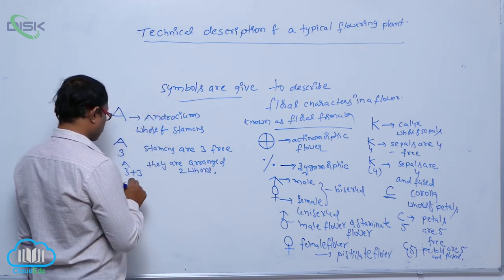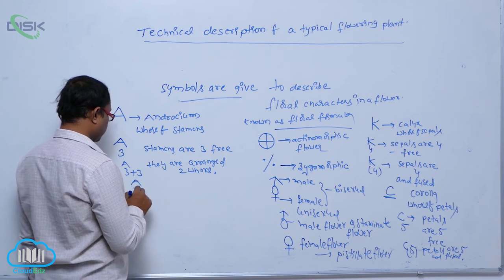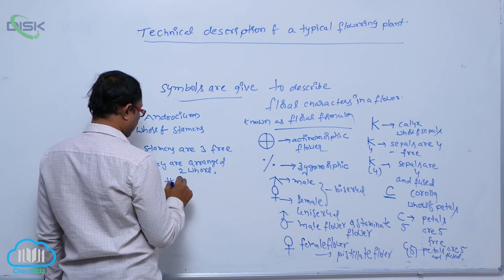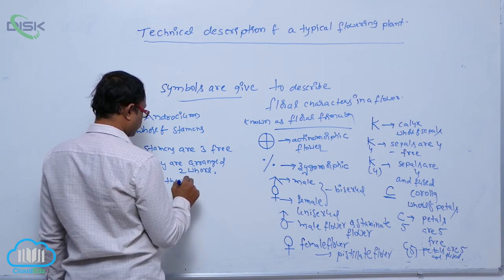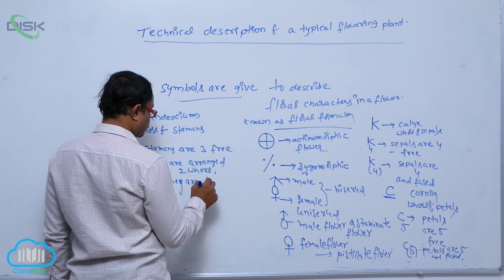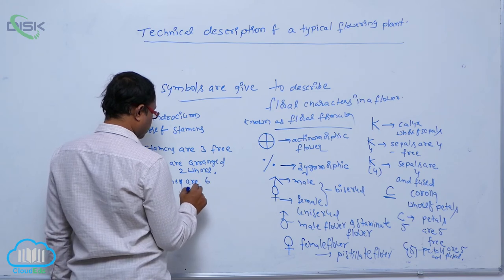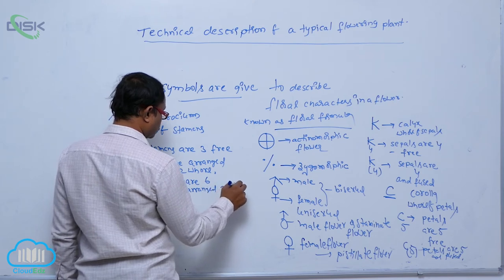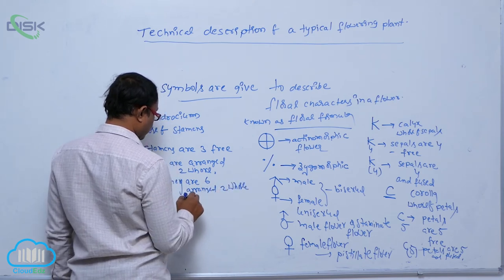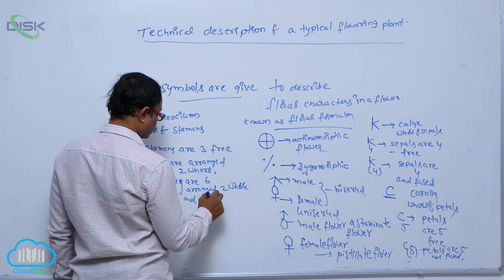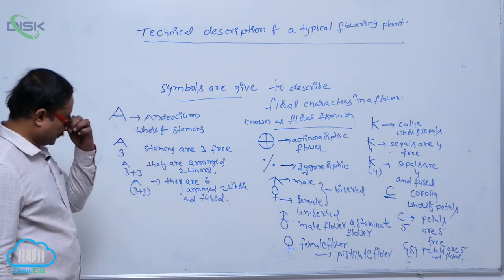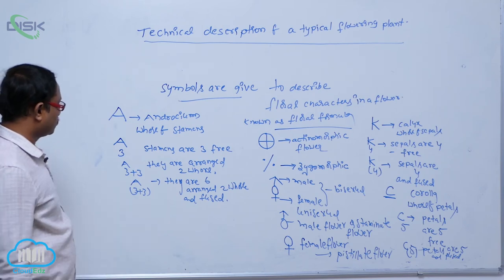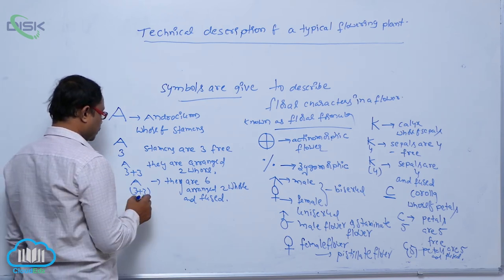For example, A(3+3) within bracket means there are six stamens arranged in two whorls, and this physical condition means stamens are fused among themselves. That is known as cohesion.